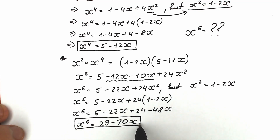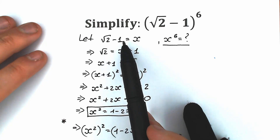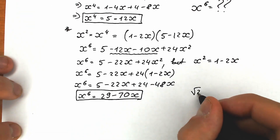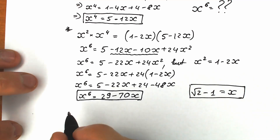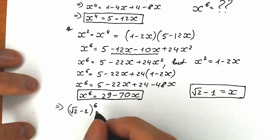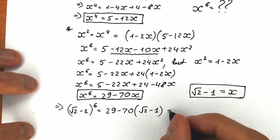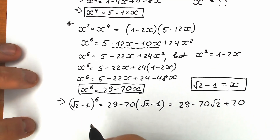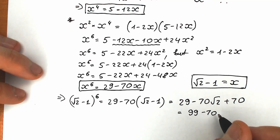A lot of students ask, okay mister, but you told that this is our answer — we need to find x to the 6th power. But just keep in mind that square root of 2 minus 1 equals x. Right now we're going to plug in square root of 2 minus 1 instead of x, because square root of 2 minus 1 equals x from the beginning. So our answer is: square root of 2 minus 1 to the 6th power equals 29 minus 70 times (square root of 2 minus 1), which expands to 29 minus 70 square root of 2 plus 70.